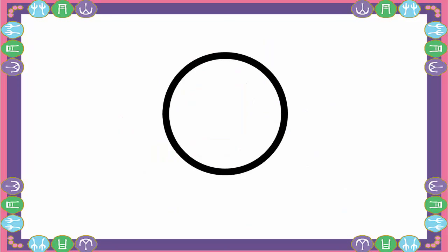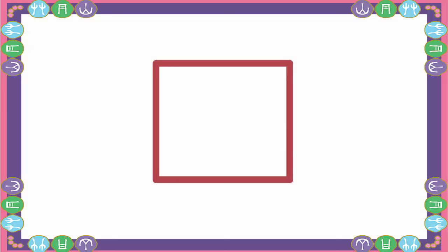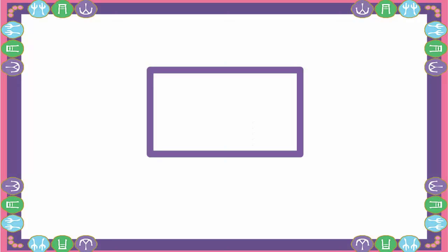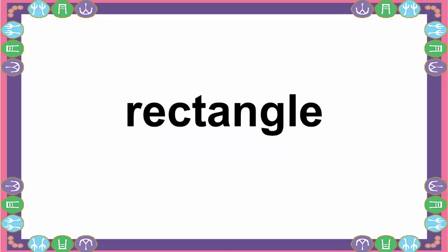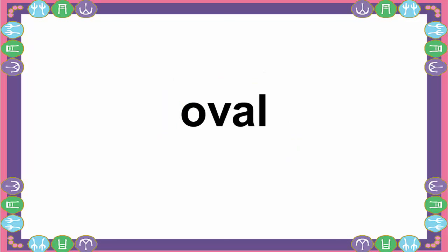What shape is this? Circle. What shape is this? Square. What shape is this? Rectangle. What shape is this? Oval.